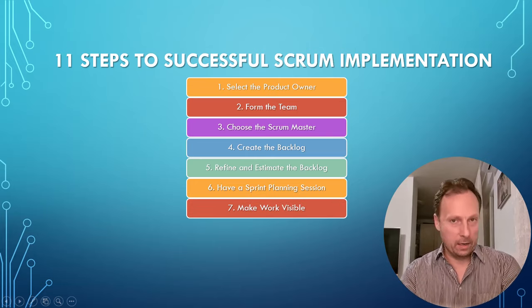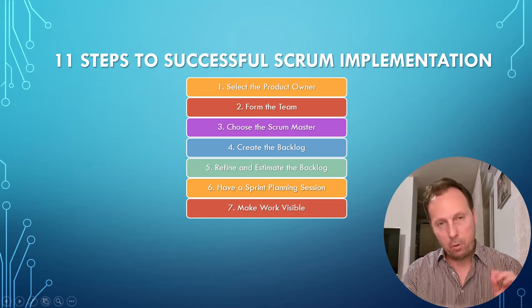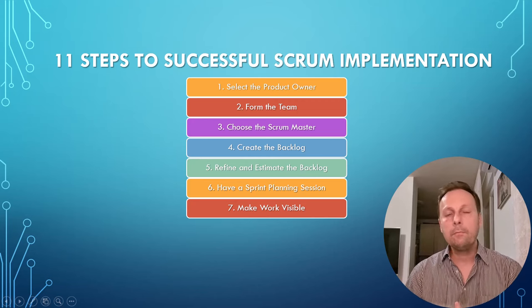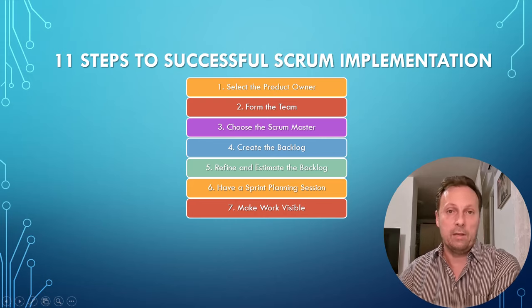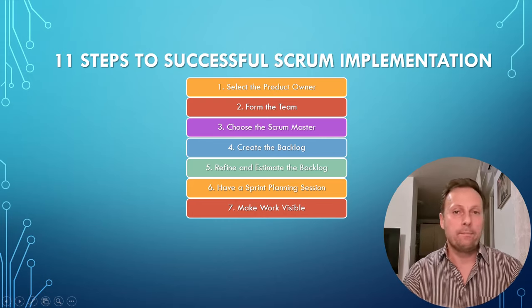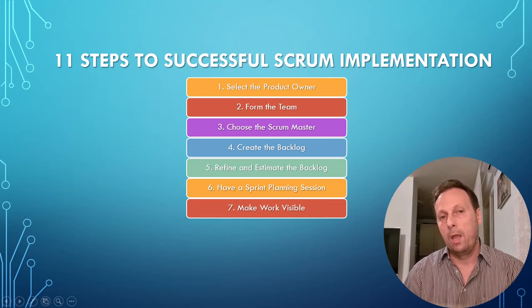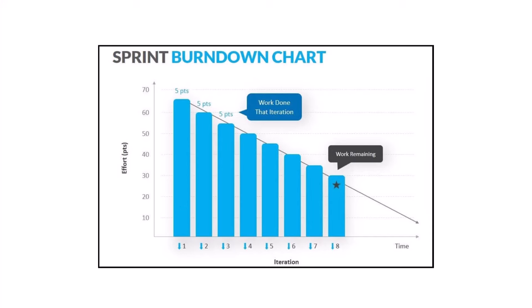Step seven: make work visible. The most common way to do this in Scrum is to create a Scrum board with three columns: To Do, In Progress, and Done. Sticky notes can represent tasks, and team members move them across the board as they complete them. Another way to make work visible is to create a burndown chart. On one axis is the number of points entered into the sprint, and on the other is the number of days. Every day the Scrum Master tallies completed points and plots them on the chart. Ideally, the graph drops steeply to zero remaining points on the last day of the sprint.